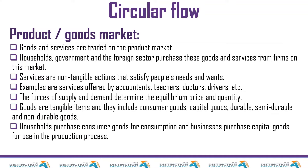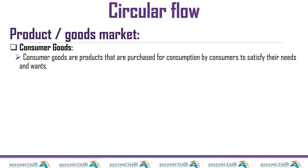Goods are tangible items and they include consumer goods, capital goods, durable goods, and non-durable goods. Households purchase consumer goods for consumption and businesses purchase capital goods for use in the production process. So anything that you buy from a shop as a person representing households — if you buy it for consumption, it is a consumer good. A good example is food, clothes, and all those things.